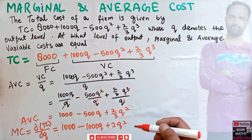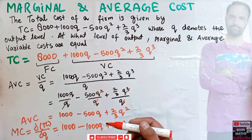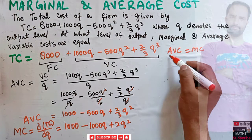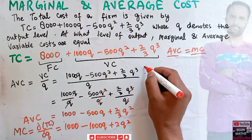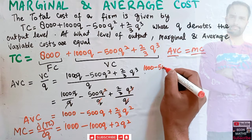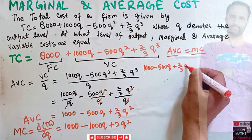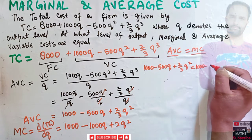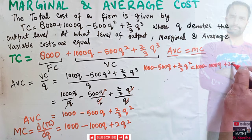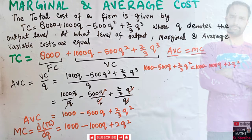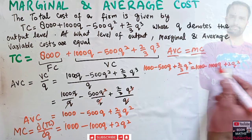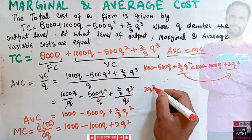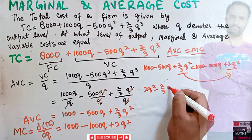To find the output level where marginal cost equals average variable cost, we equate AVC with MC: 1000 - 500Q + (2/3)Q² = 1000 - 1000Q + 2Q². Transposing (2/3)Q² to the right gives 2Q² - (2/3)Q².